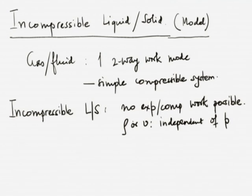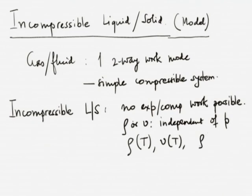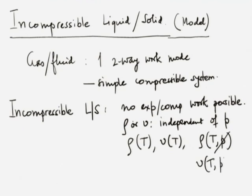Specific volume could be a function of temperature, but it is definitely not a function of pressure. We can write: rho could be a function of temperature, or V could be a function of temperature, and rho is not a function of pressure — pressure cancels out. For an incompressible material, there is no effect of pressure.